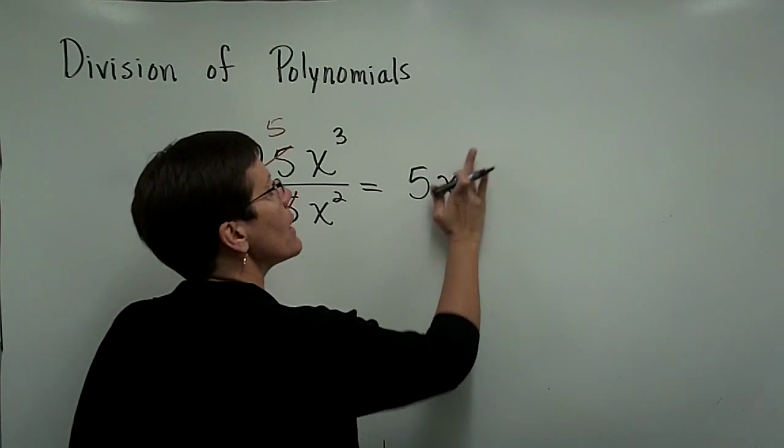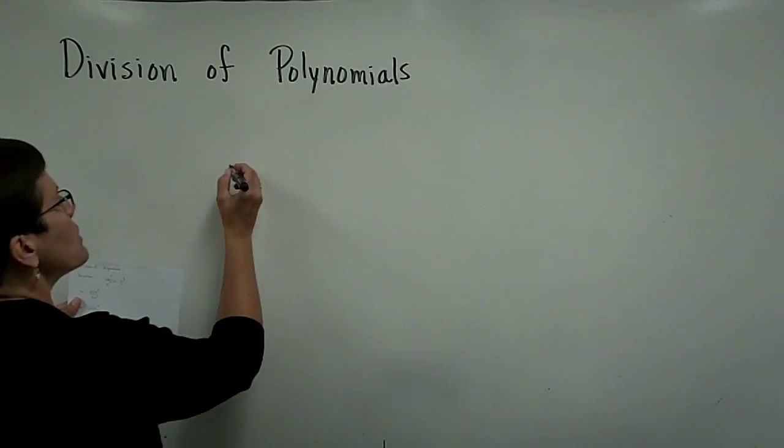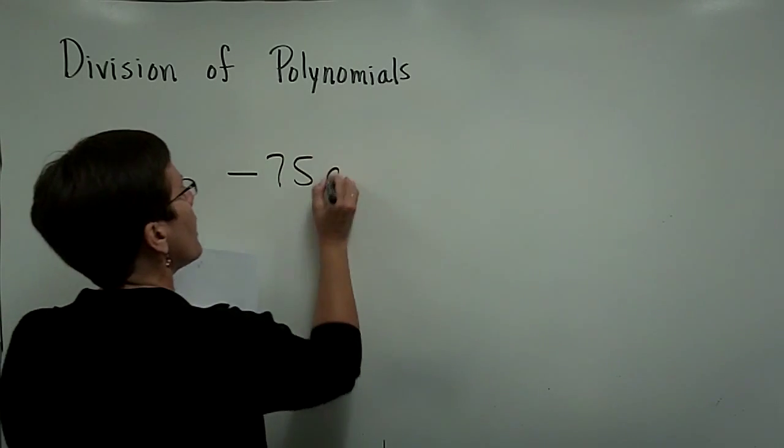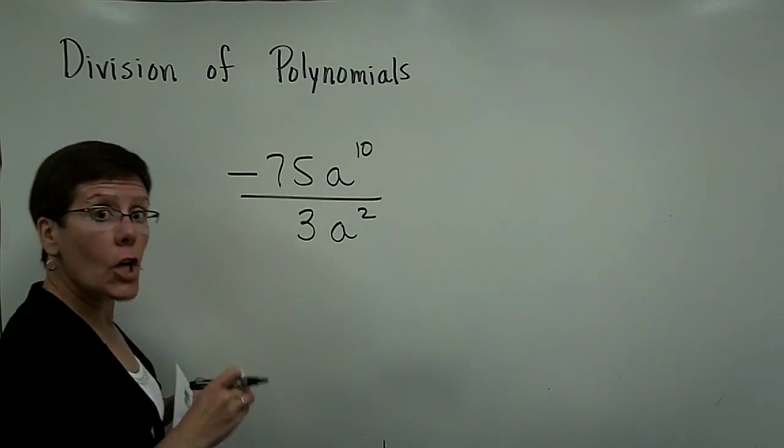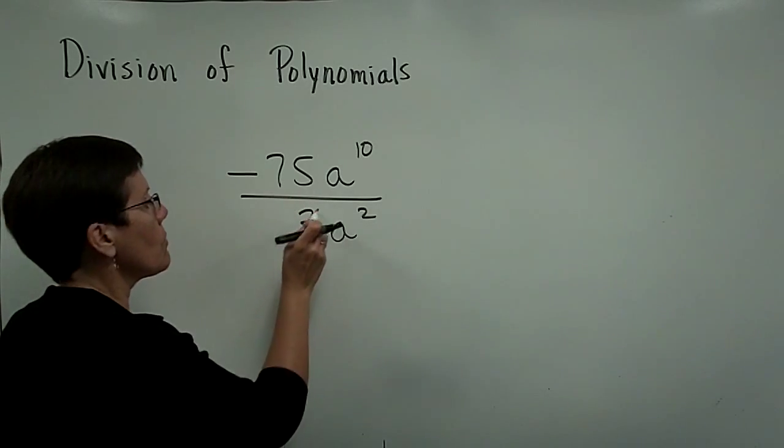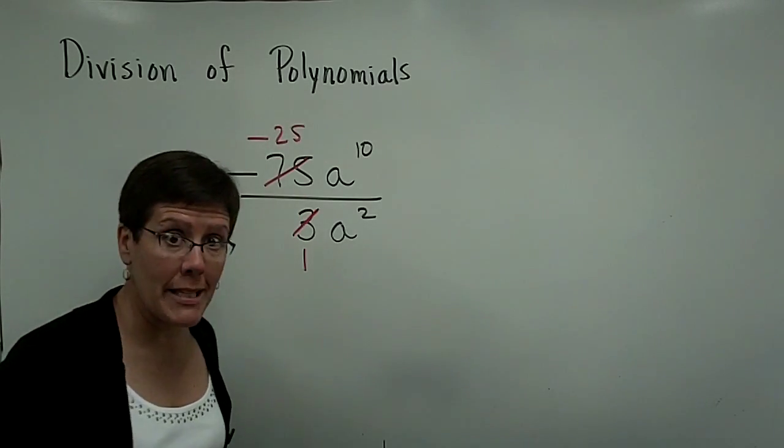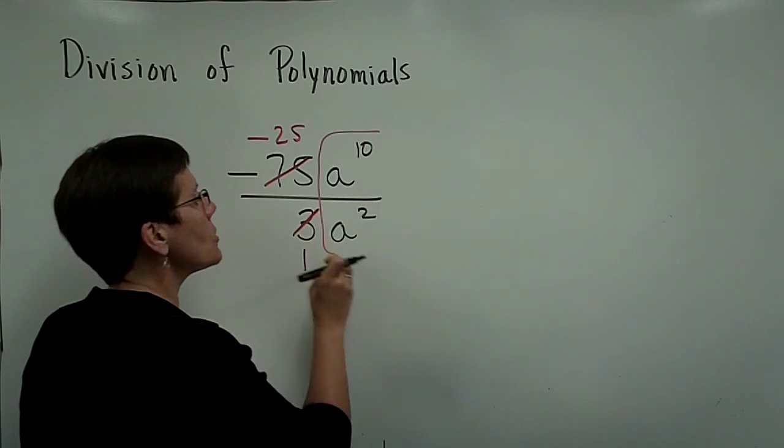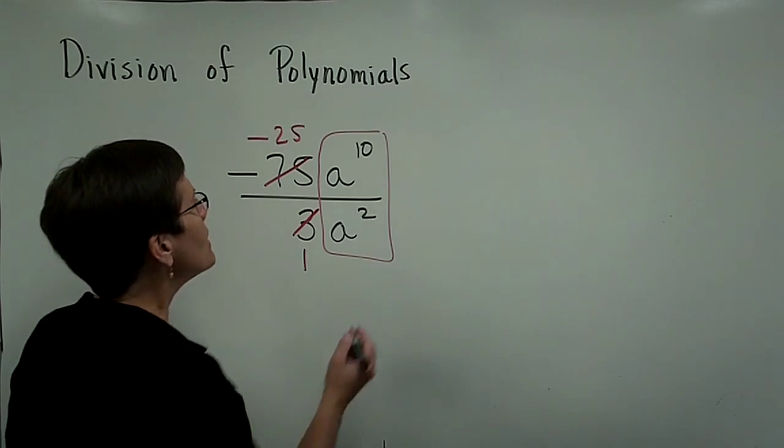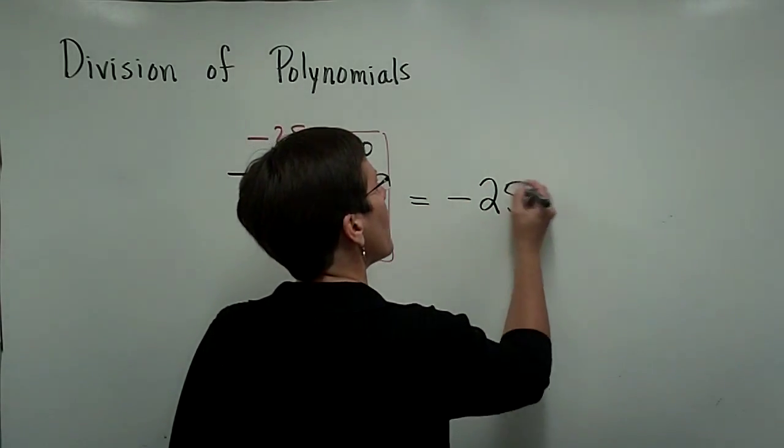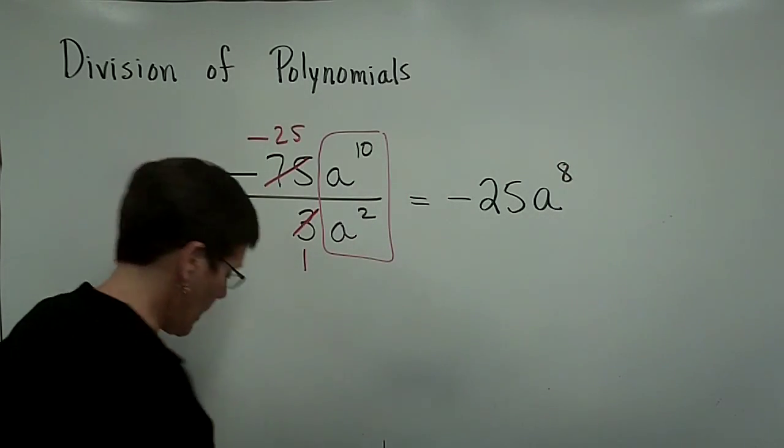Please remember, we don't tend to write that 1. The next one that I'd like to share with you just has some bigger values, some different exponents. A negative 75 a to the tenth divided by 3 a to the second. So the coefficients can be reduced. 3 goes into here once, and into here 25 times. That coefficient will be a negative 25. I take these two, whose bases are alike, and I subtract their exponents. 10 minus 2 is 8. So I will have a coefficient of a negative 25, and my base of a will be raised to the eighth power, because 10 minus 2 is that 8.